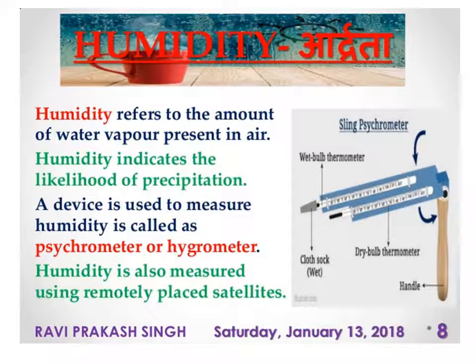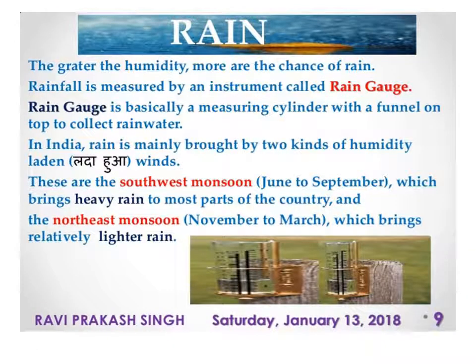A psychrometer or hygrometer is a device used to measure humidity. You can also measure humidity using remotely placed satellites. Rain: the greater the humidity, the more are the chances of rainfall. Rainfall is measured by an instrument called a rain gauge.